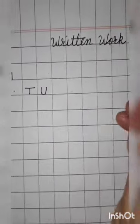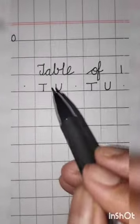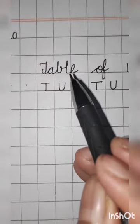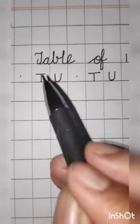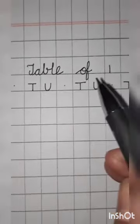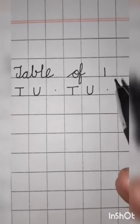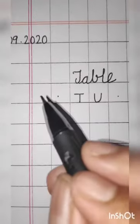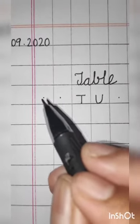Right side, written work. In the third row, table of one. First letter should be capital T-A-B-L-E. Table O-F of one. From the margin line, leave two boxes.